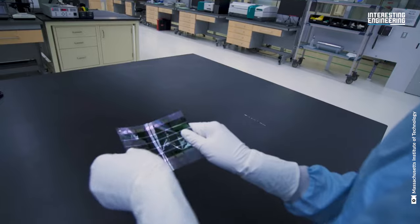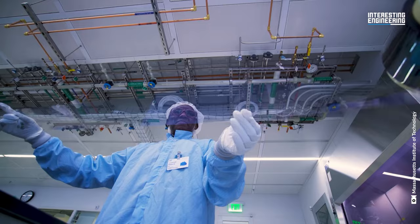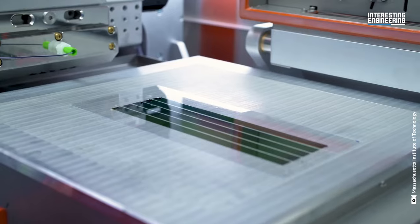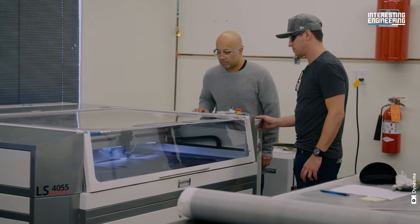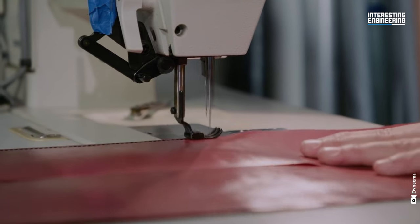But there's a challenge. These ultra-thin solar modules are delicate. They can tear easily, making them hard to deploy. The solution? Fabrics. The MIT team identified fabrics as the perfect substrate for these cells.